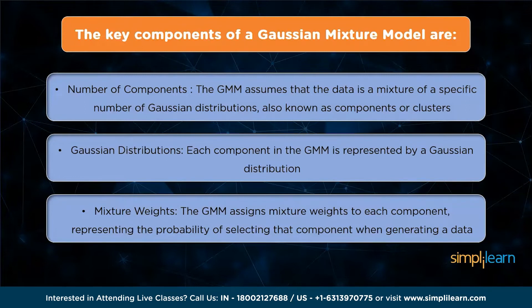Using a Gaussian mixture model involves estimating the model parameters including the means, covariances, and mixture weights. This is typically done through an iterative optimization algorithm like the Expectation-Maximization algorithm. The EM algorithm alternates between estimating the responsibilities of each component for each data point and updating the model parameters based on those responsibilities, continuing until convergence where the parameters reach a stable state.